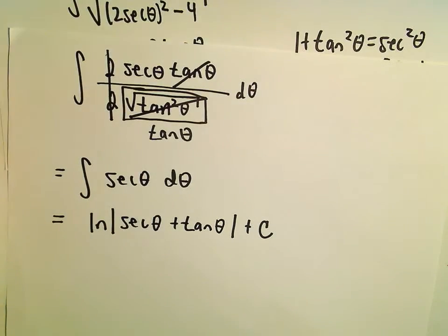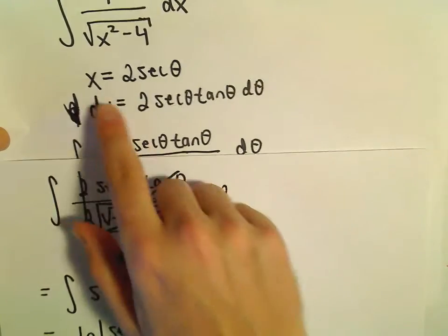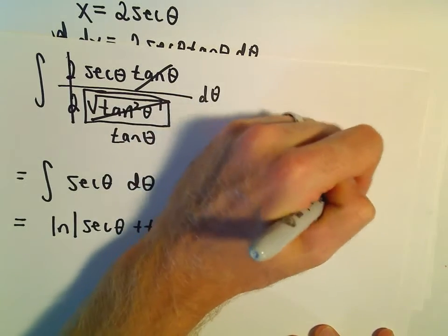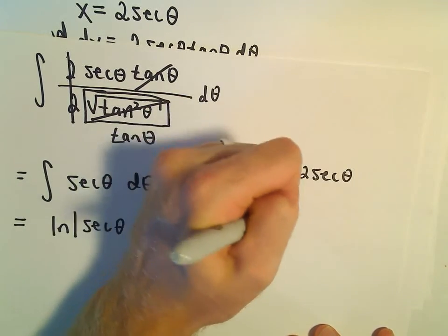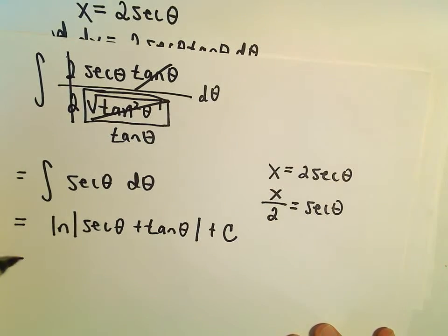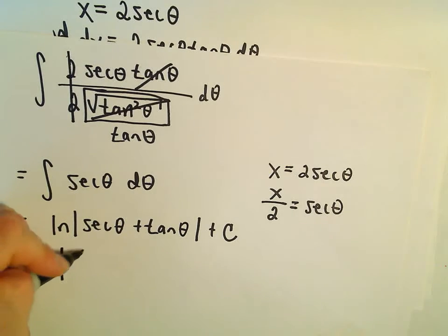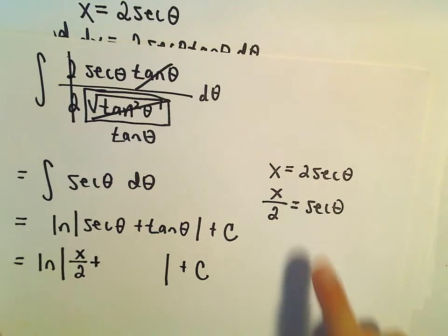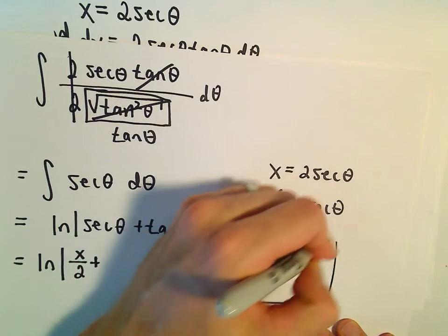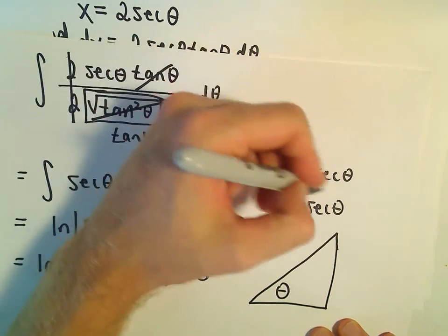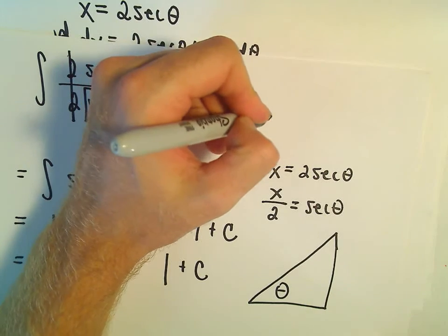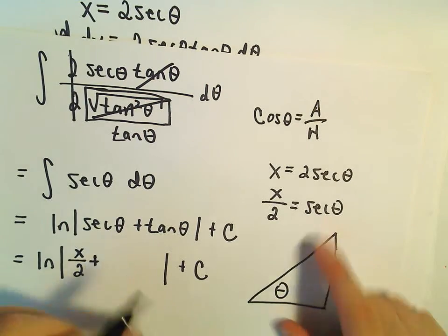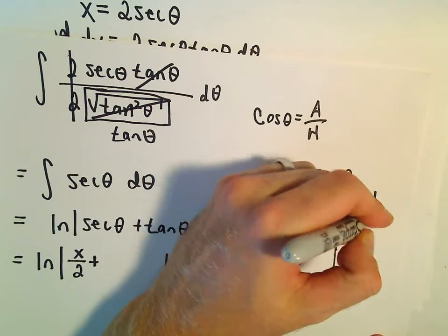We now have to go back to our original substitution. Since x equals 2 secant theta, dividing by 2 gives x over 2 equals secant theta. So we substitute that in and have the natural logarithm of x over 2 plus tangent theta. We still need an expression for tangent theta, so we'll use a right triangle. Secant is hypotenuse over adjacent, so the hypotenuse is x and the adjacent side is 2.